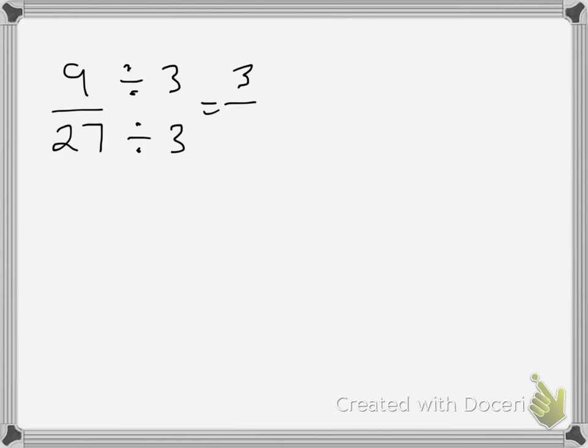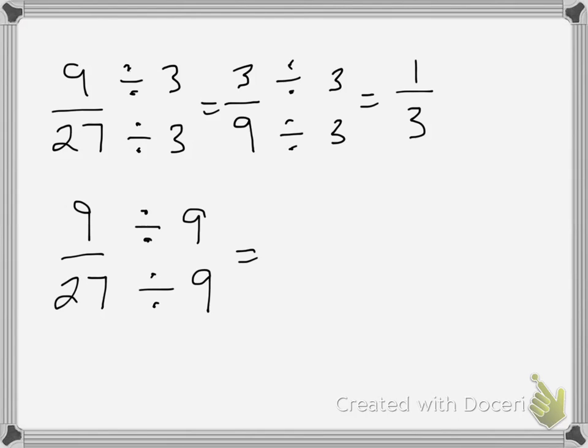9 divided by 3 is 3, and 27 divided by 3 is 9. We've reduced the fraction, but not all the way, because they can both be divided by 3 again. So we have to go through that process one more time. 3 divided by 3 is 1, and 9 divided by 3 is 3. Again, if we had figured out that the greatest common factor between 9 and 27 is actually 9, then we would get to that same one-third, but we'd get there in one step. But again, either way is fine.